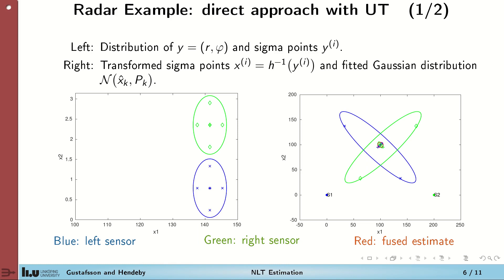Now let's see what happens if we use the unscented transform to transform the measurements from the range-bearing domain to the Cartesian domain. The left side of the picture shows the measurements in the range-bearing domain where they are Gaussian — seen as two circles or ellipsoids. After applying the transformation, we get two slanted ellipsoids on the other side. Notice how we miss the banana shape and have to make the ellipsoids wider to cover for the bend in the distribution. When we combine the two measurements, we get a pretty good estimate of the true variable, though it might be slightly too tight to fully cover all properties of this nonlinear transformation.